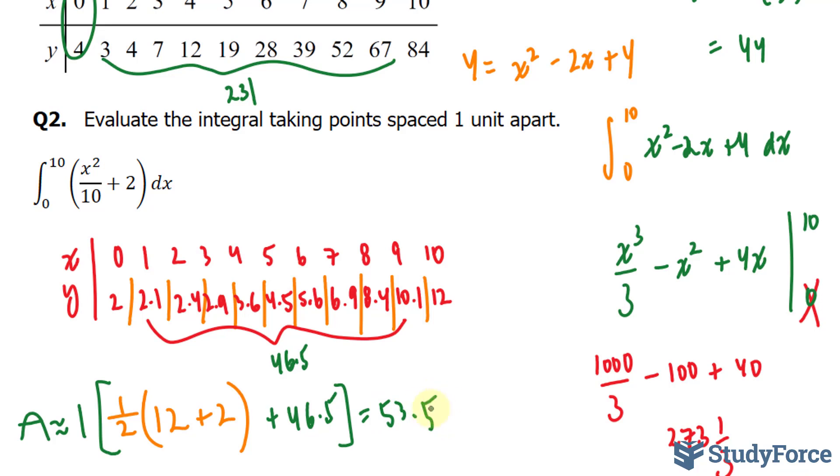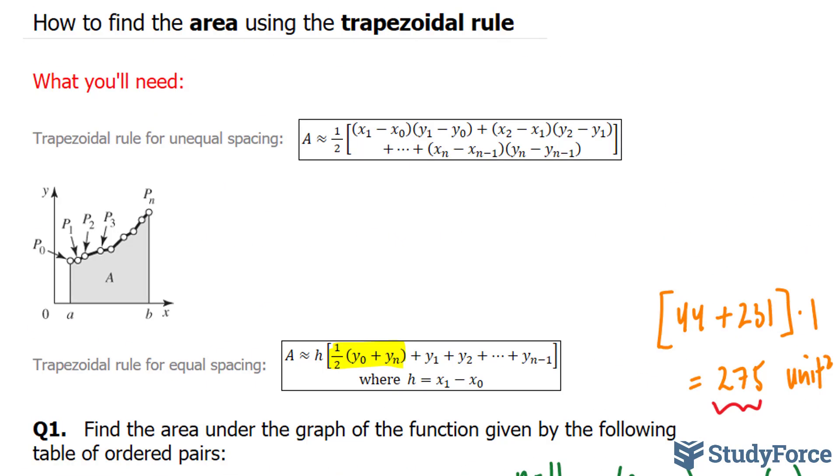Now as an exercise for you, you could actually go ahead and figure out the area without this method. And see how it compares to 53.5 units squared. And so there you have it. Two examples on how to find the area using the trapezoidal rule.